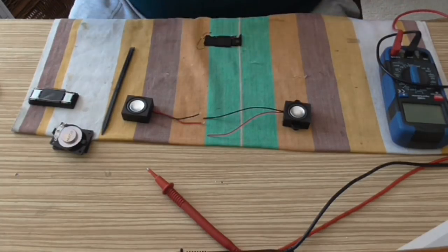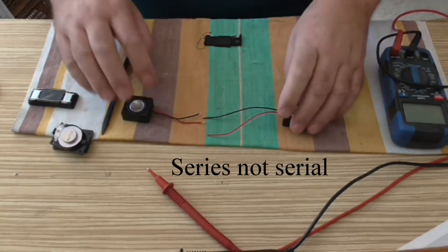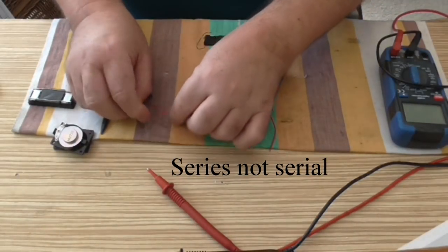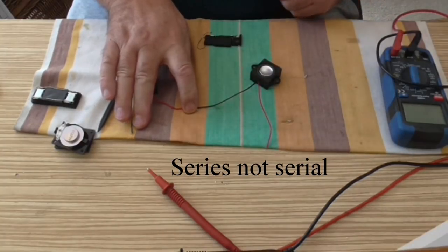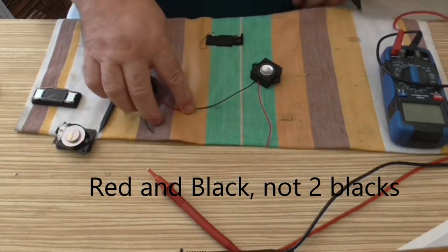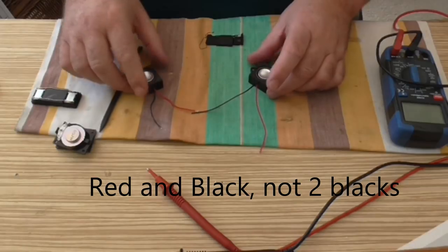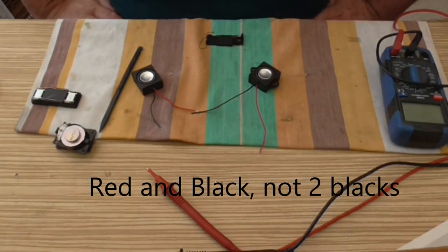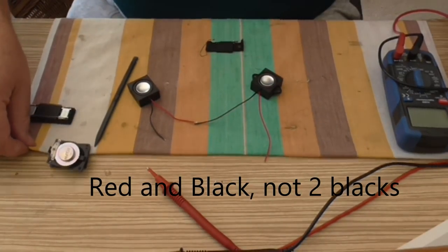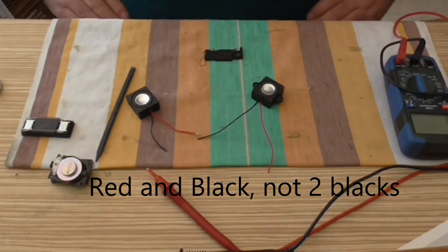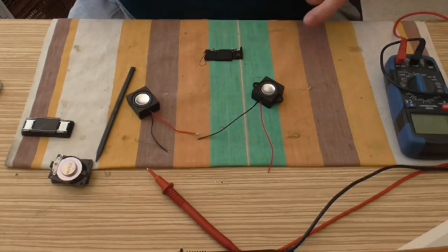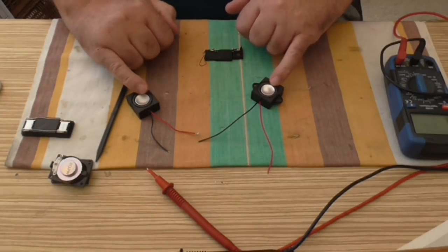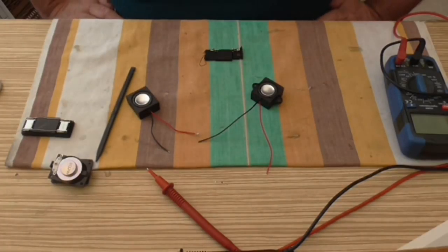If I wanted to put them in serial, I would connect black to red, and the two blacks would go to positive and negative on your decoder, or your circuit board on your train. Now if you put the two together, you get twice the amount. 8 ohms speaker, 8 ohms speaker, times 2, so you get 16 ohms. Now again, that's fine.